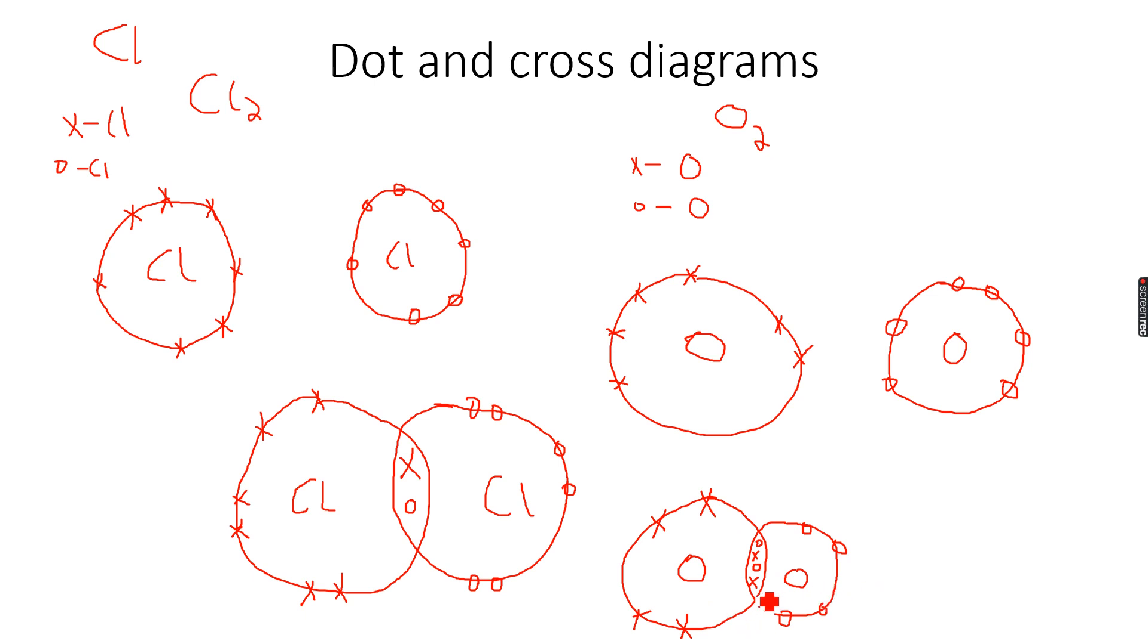And then for the second atom, one, two, three, four, five, six, seven, eight. Now, both of them have eight electrons. Both of them are stable. Both of them are happy.